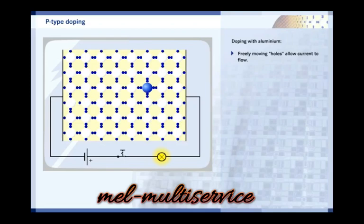Hole conduction is not the same thing as electron conduction or metallic conduction. For simplicity's sake, it may be seen as a movement of positive charge carriers. Semiconductors which are doped in this way are called P-type semiconductors. The P stands for positive, which is the charge of the holes.